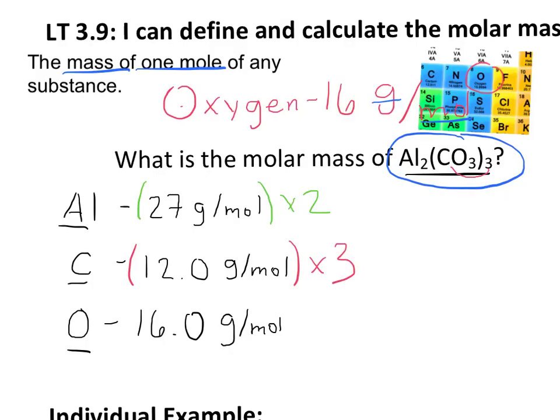And lastly, if we distribute the subscript inside the parentheses to oxygen, we actually have nine oxygen atoms.